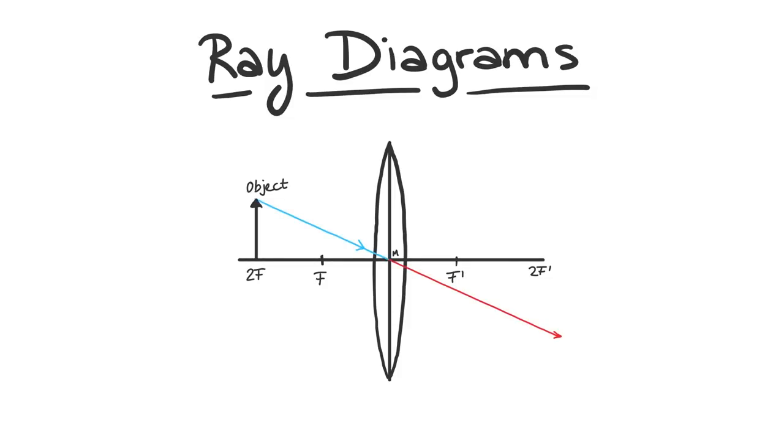Step 2 is drawing a line starting from our chosen point that is parallel to the principal axis. After being refracted, this line passes through the focal point behind the lens.